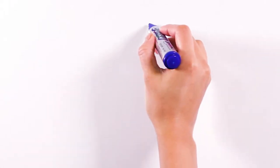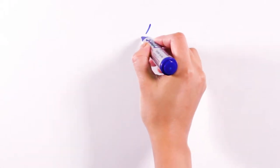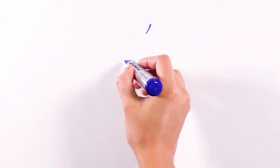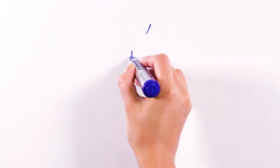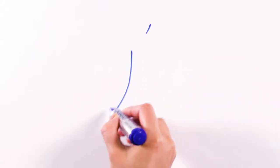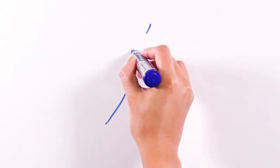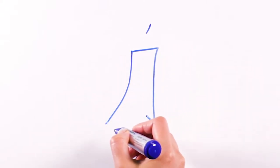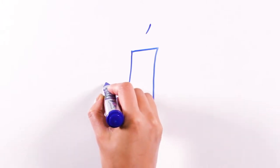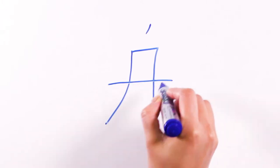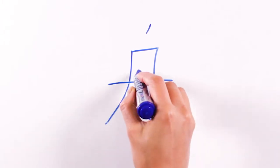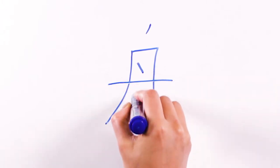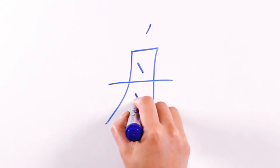We start from a dot, two, three, four, five, and six — six strokes in total.